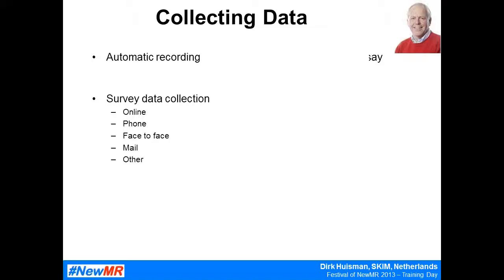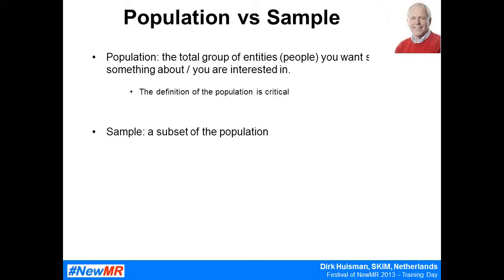Each method has its pros and cons. You conduct a study in order to draw conclusions about a group of people that are of relevance. For instance, in political polls you want to say something about people who may vote, and when you are Heineken or Budweiser you want to draw conclusions about beer drinkers. The total group you want to say something about is called the population, also called the Universe. In quantitative research, it is critical to be precise and clearly define that population — for instance, all men and women in South Estonia of 18 years and older who drink beer.